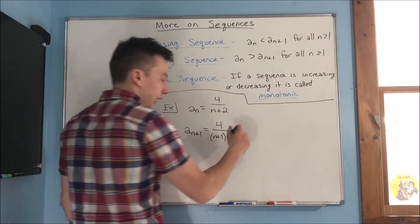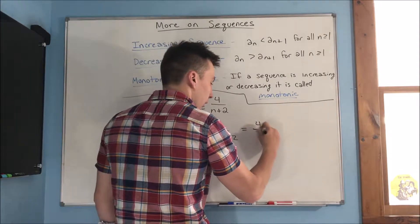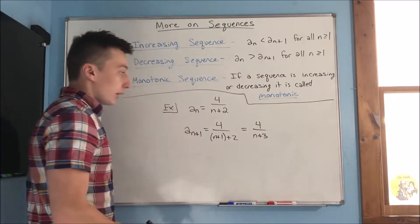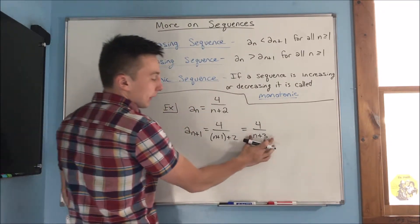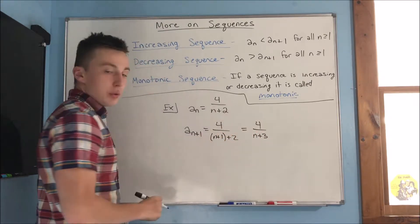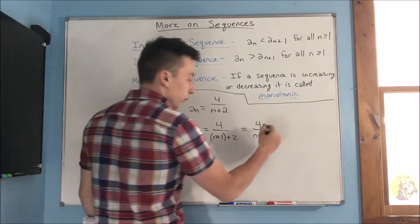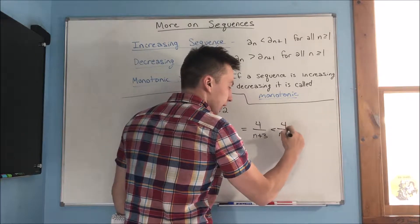When we do that out, n plus 1 plus 2, that's going to be 4 over n plus 3. Since n plus 3 is a larger denominator than n plus 2, the whole fraction is going to be less than 4 over n plus 2.